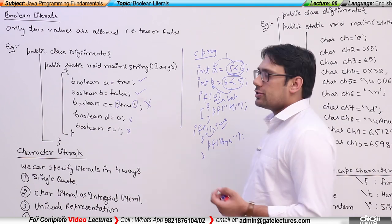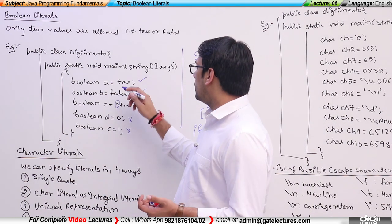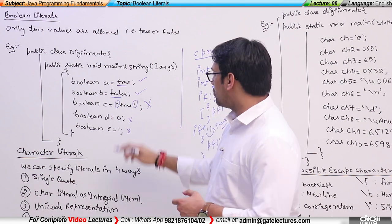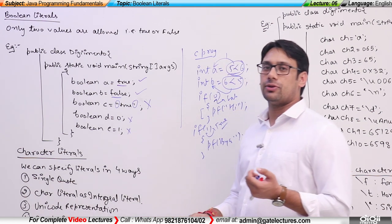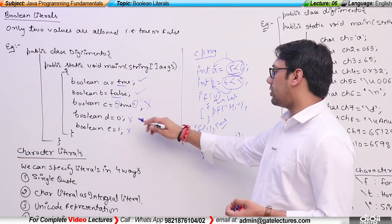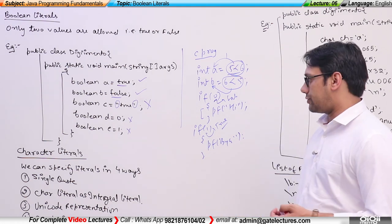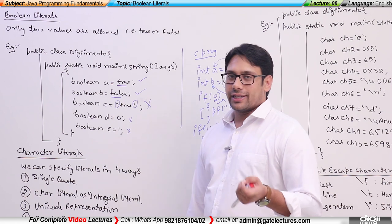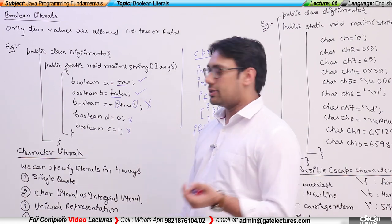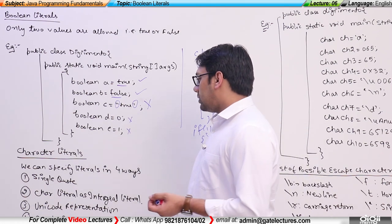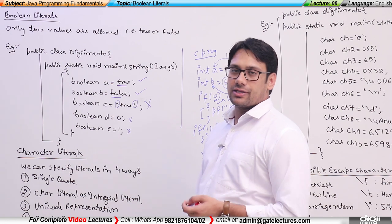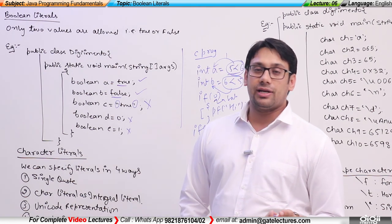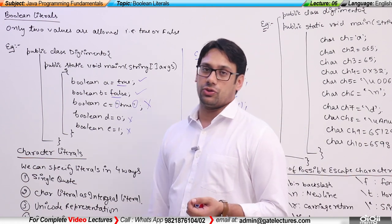In Java, for true and false we use separate notations — that is, true and false. We cannot use 0 and 1. Boolean variables can only take the values true and false; they cannot take 0 and 1. Next are character literals. Characters are a single unit representing symbols, such as letters or other symbols.